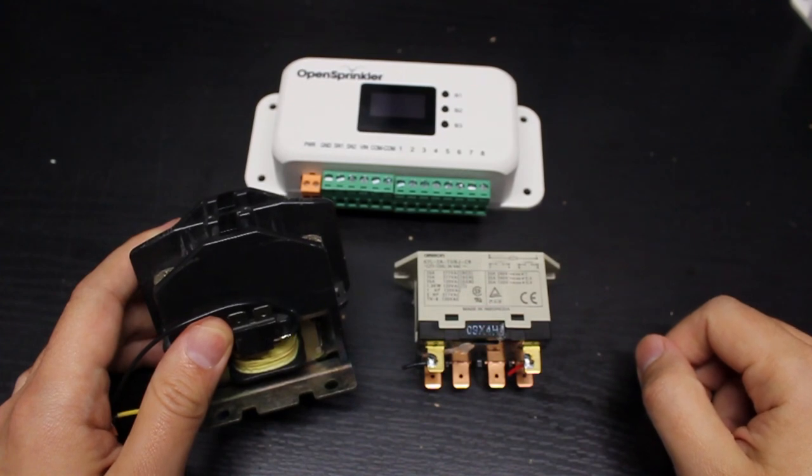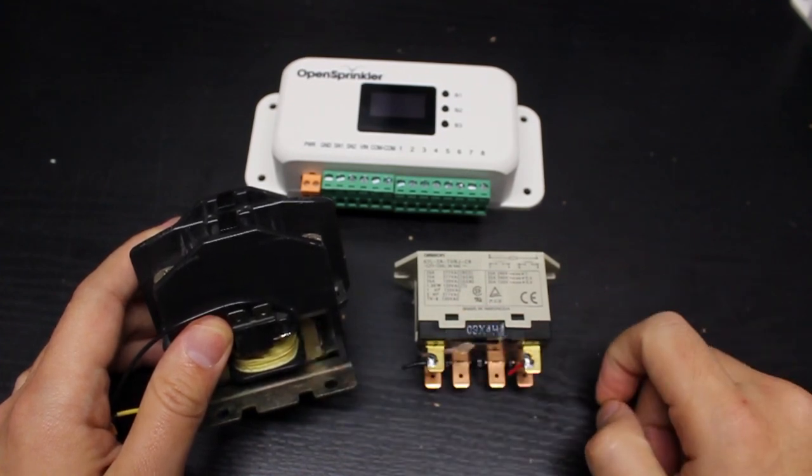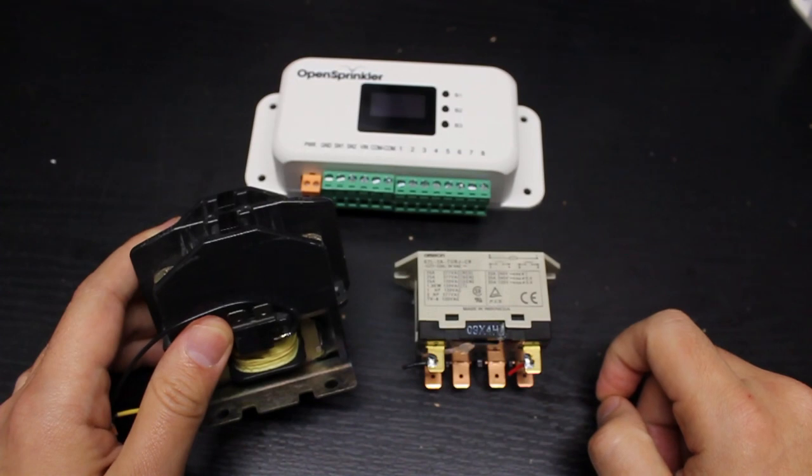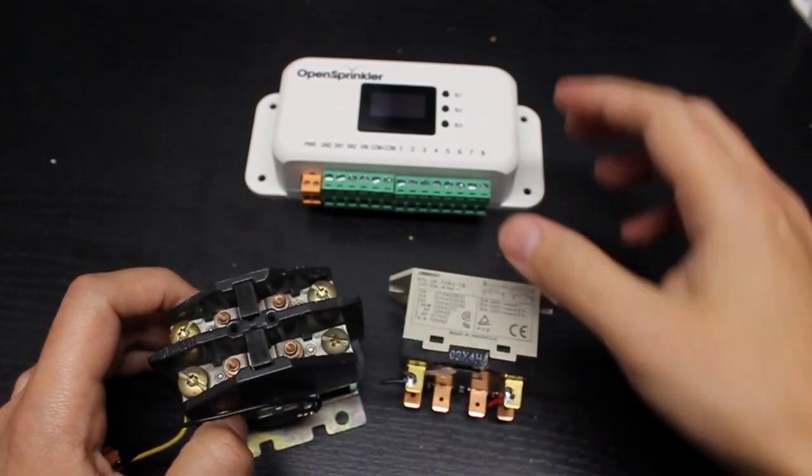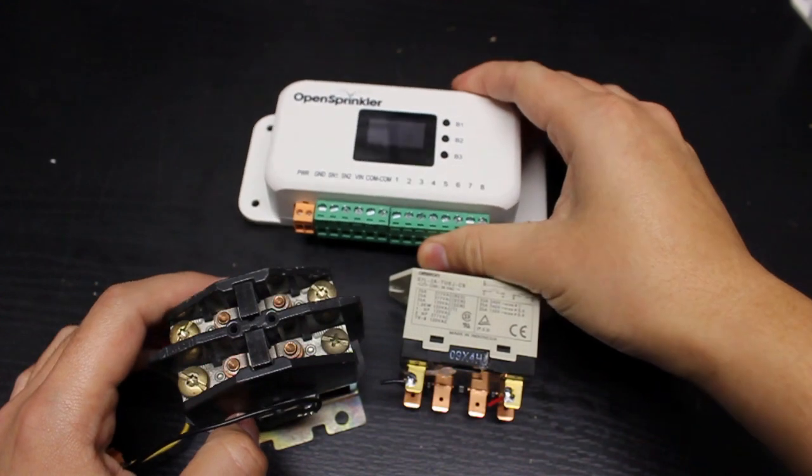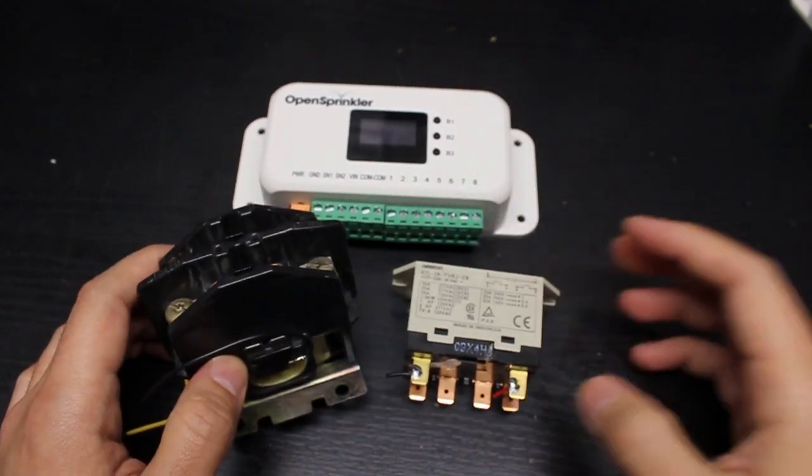However if you have a pump start relay like these ones, these are generally used to start a pump, you are better off staying with the AC powered OpenSprinkler because it's compatible with all pump start relays.